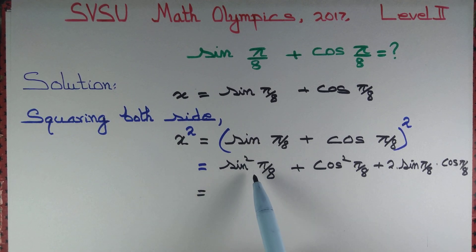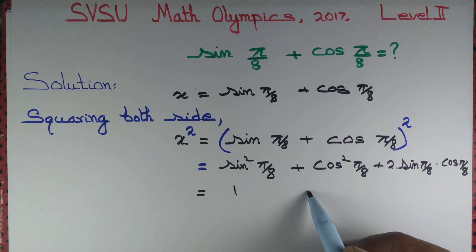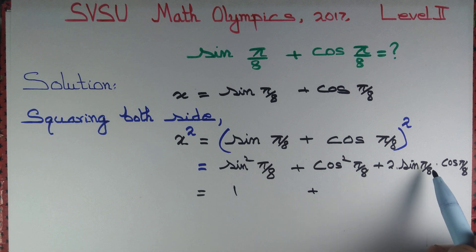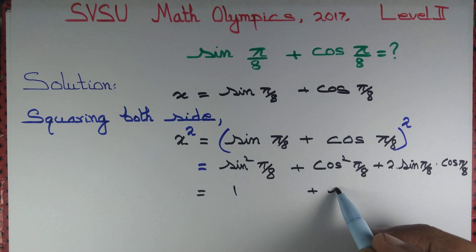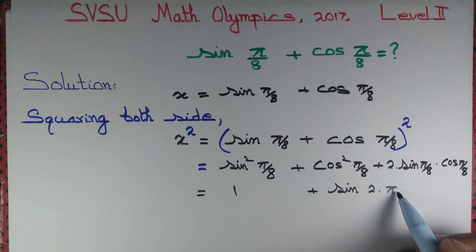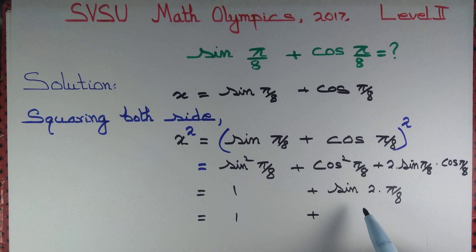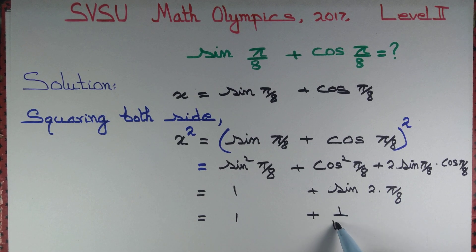Next, we know that sin² θ plus cos² θ is simply equal to 1, and 2 sin a cos a equals sin 2a, so 2 times π/8. That's equal to 1 plus sin π/4, and sin π/4 is 1 by root 2.